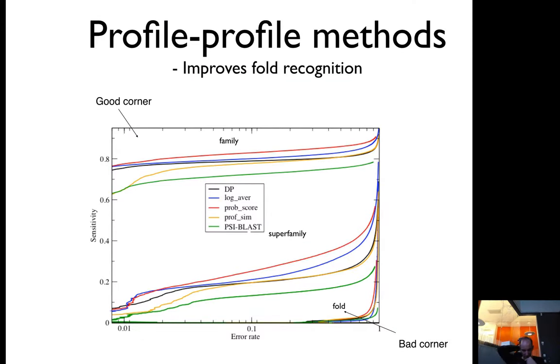What we have shown in many papers is that you can get quite significant improvement. This plot measures the error rate of specificity and sensitivity - the higher the better. You see in every corner you get better performance with the red one, which is one of the scoring methods.